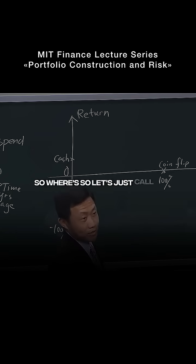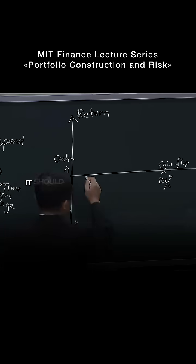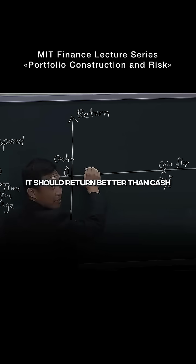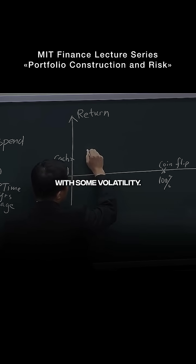So let's just call it a 5-year note or a 10-year bond. It returns better than cash with some volatility. Let's call it here.